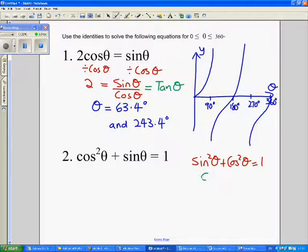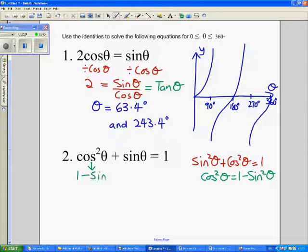And so I'm now going to subtract sin² θ from both sides to leave me with 1 minus sin² θ is worth cos² θ. And so hence I shall replace cos² θ with 1 minus sin² θ plus sin θ equals 1.